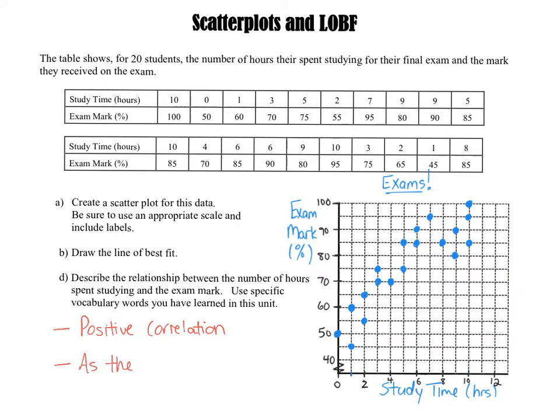Here's the sentence. As the—and we start with the independent variable first—so as the study time increases. That will always be the first sentence. As whatever the independent variable is increases. Then the exam mark. And here you decide, is it increasing or decreasing? Here it's positive, so they're both increasing. So the exam mark also increases. That's the sentence you need to be comfortable with.